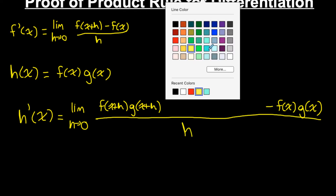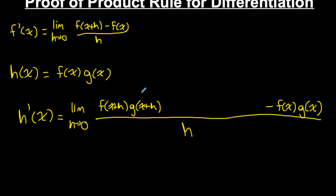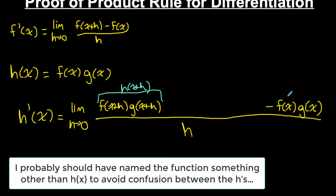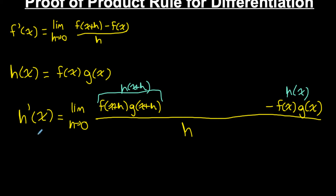Just to make sure we're on track: I'm following Newton's quotient. This expression is just h(x+h), and this is just h(x). So I did h(x+h) minus h(x) all over h — that's the derivative of h(x). It just so happens that h(x) is a product of two things.